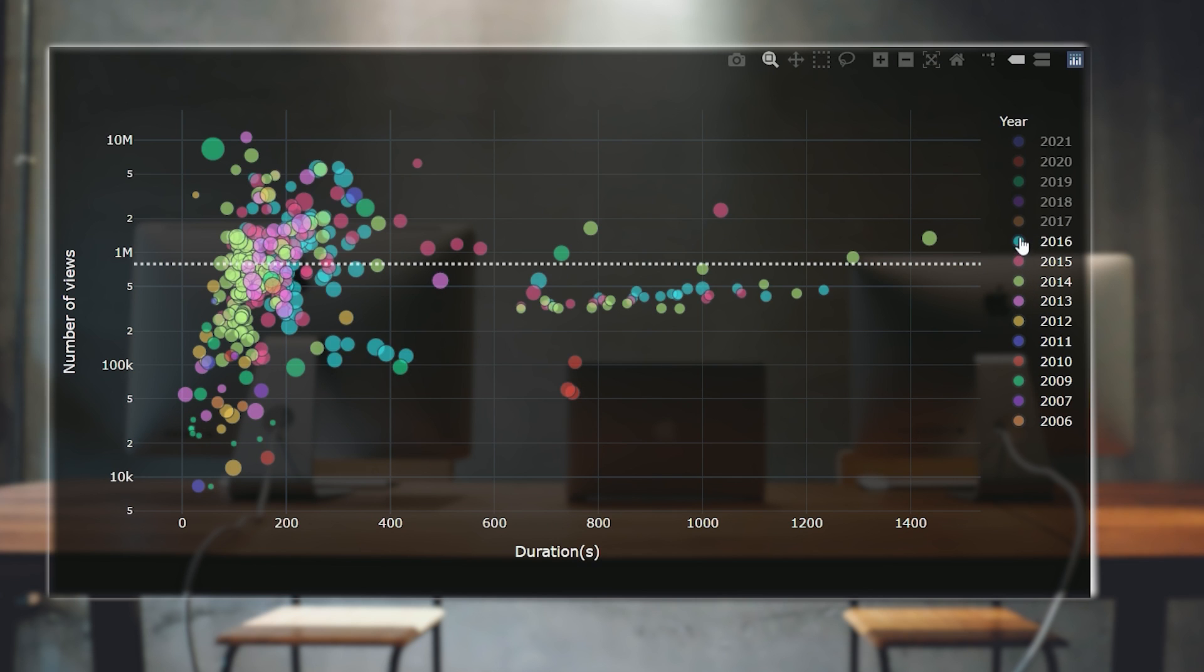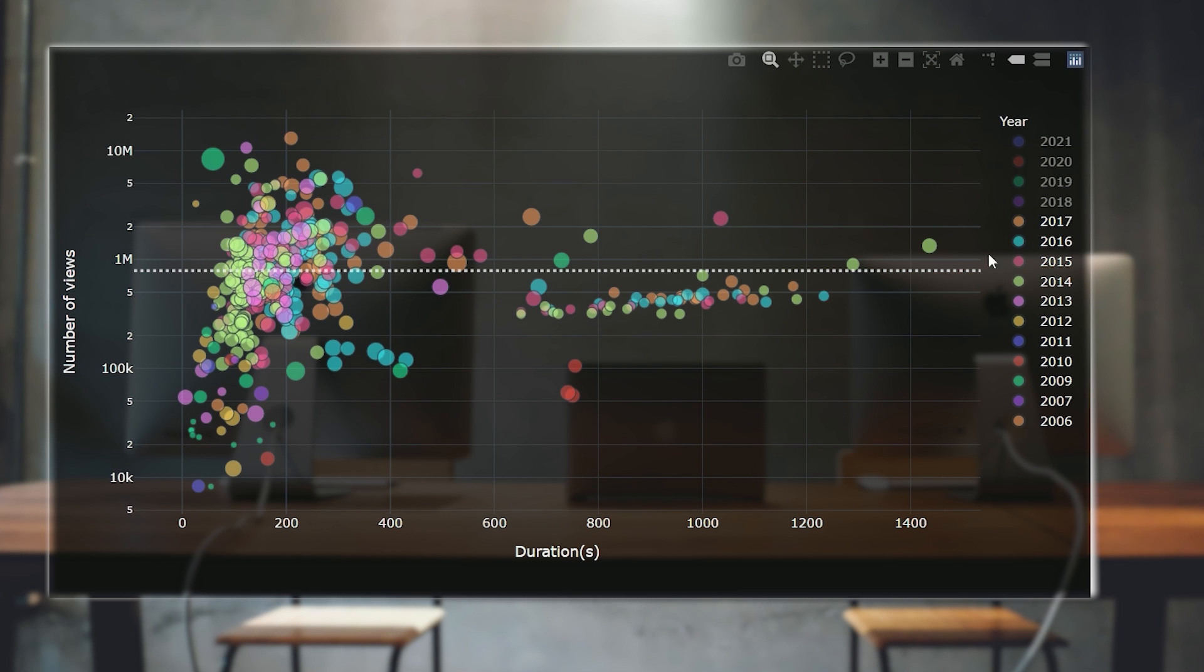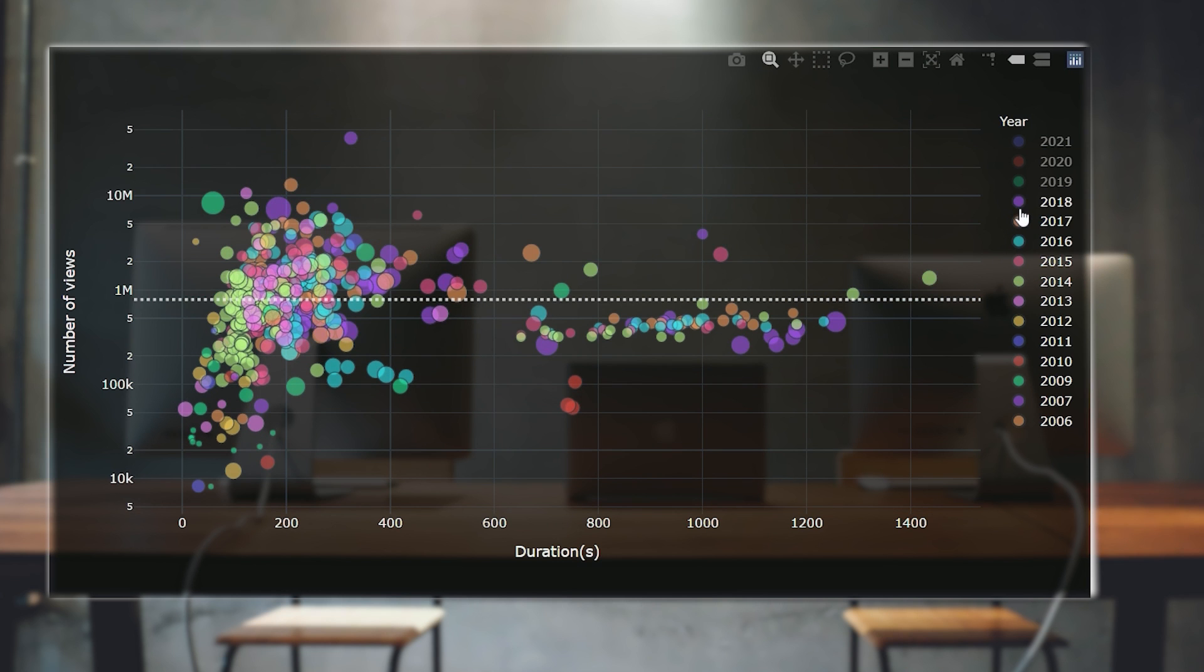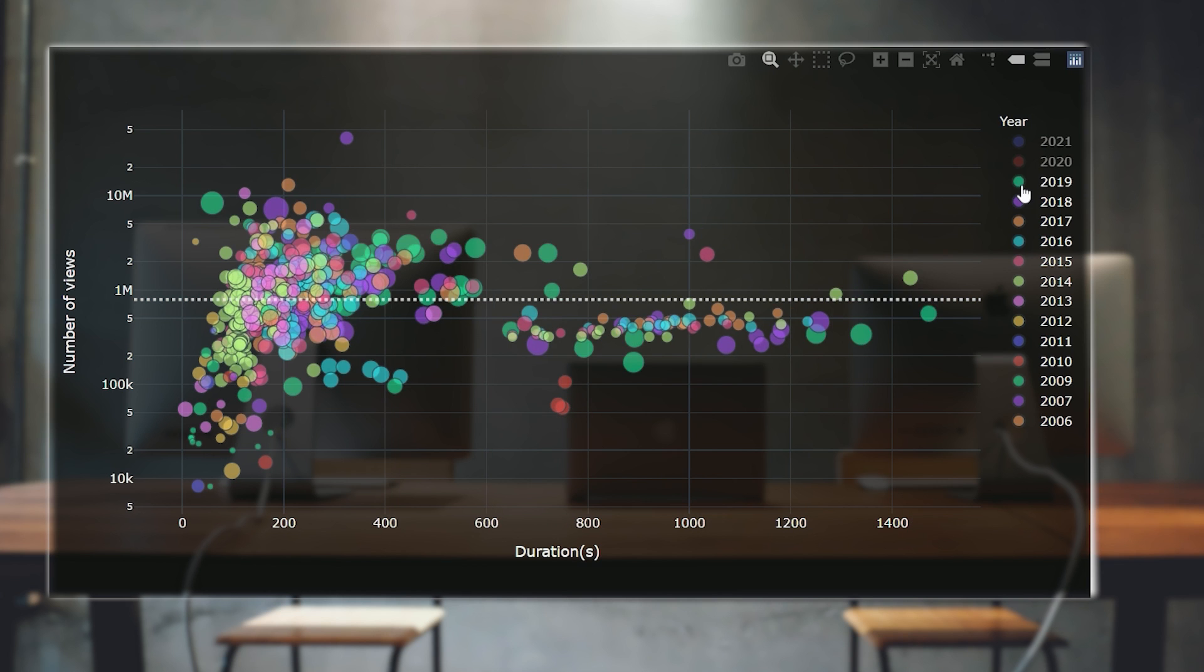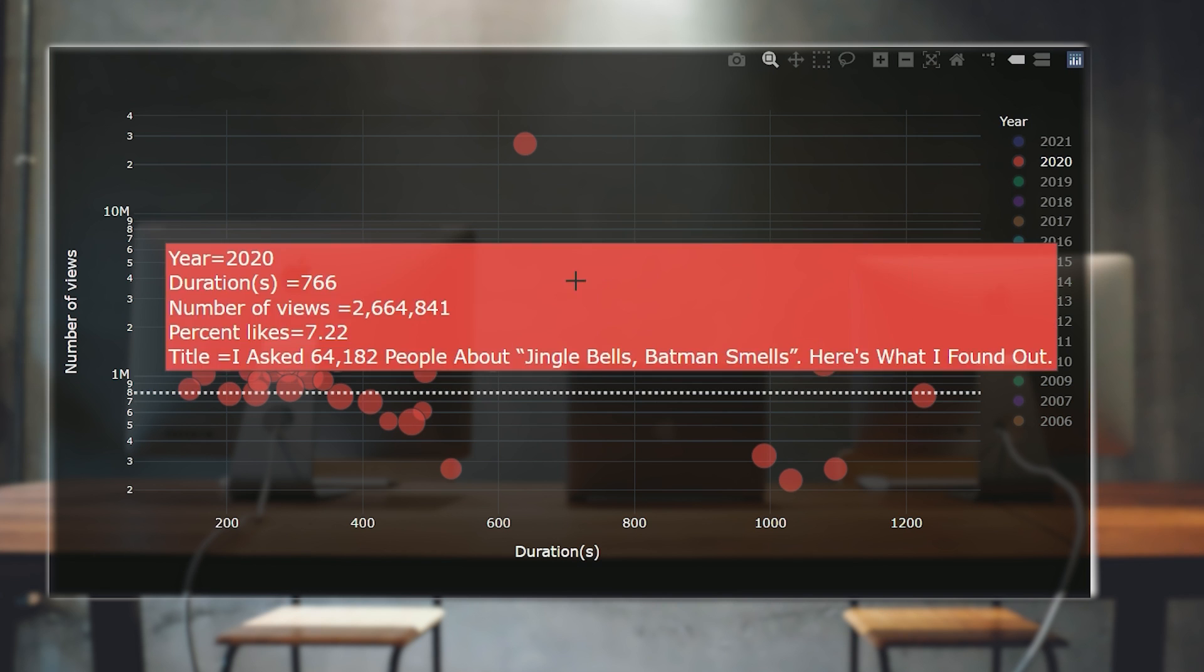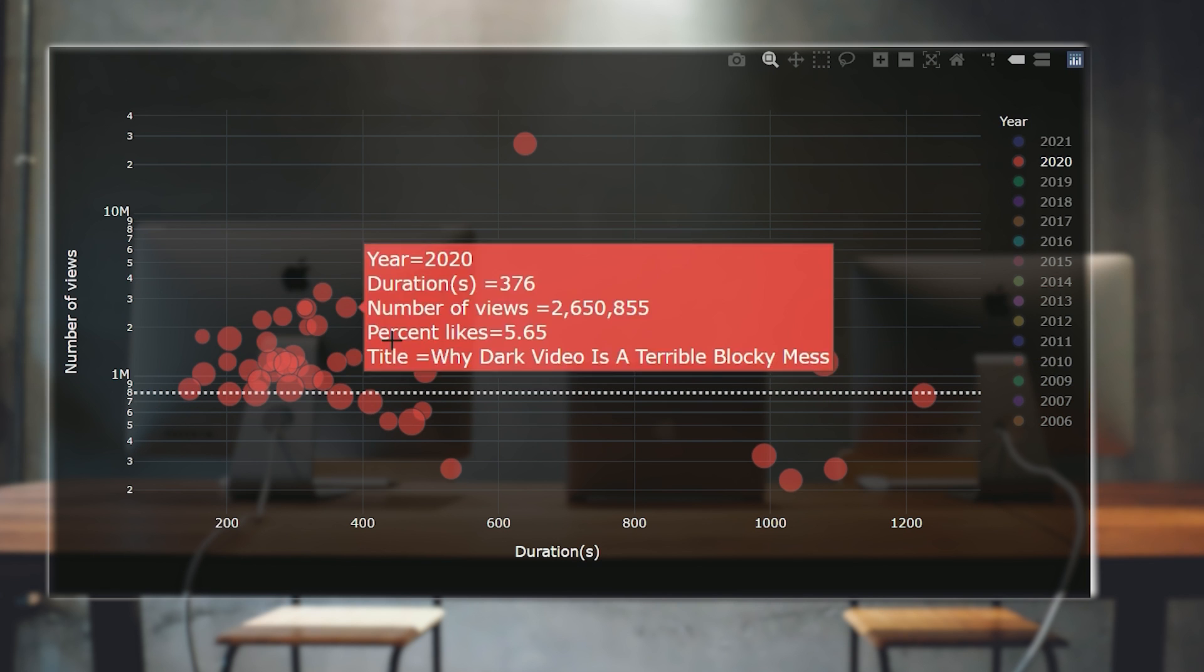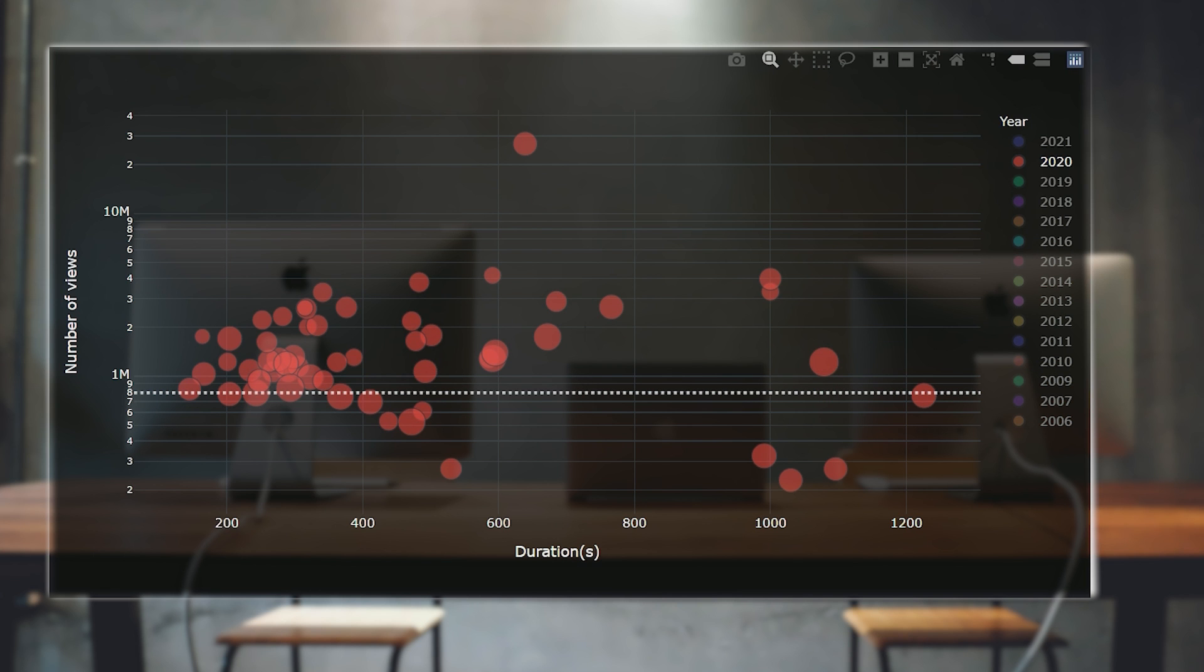From 2015, we see videos getting longer, but also receiving more views, and that trend is very visible when we get to 2020, where we have a lot of videos in this area of the chart that we haven't had before. High views, long duration. Tom's viewers are watching for longer.